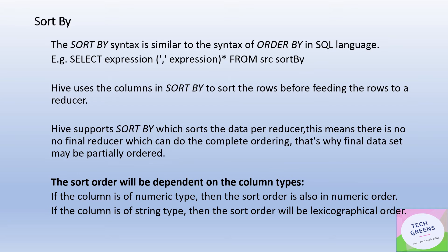SORT BY performs the ordering of the data set per reducer. That means there is no final big reducer that takes all the data and puts it into a complete order. If there are more than one reducer in the tasks submitted using the SORT BY clause, the final result set may not be fully or completely ordered — it may be only partially ordered, because ordering is done per reducer. If the number of reducers is one, then the behavior of SORT BY and ORDER BY becomes absolutely the same.